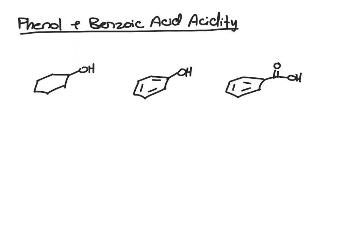We look at acidity in terms of pKa values. The pKa of an alcohol like cyclohexanol is around 16, phenol is around 10, and benzoic acid is close to 4. Remember that a lower pKa means more acidic, so of these three, benzoic acid is the most acidic.